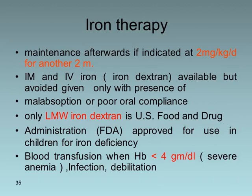Injectable iron — IV or IM — is available but should be avoided except in cases of malabsorption or poor compliance. Only low molecular weight iron dextran is FDA-approved for use in children with iron deficiency. Blood transfusion is indicated when hemoglobin is less than 4 g/dL — representing severe anemia — especially in the presence of infection and debilitation.